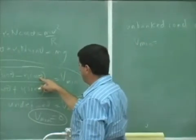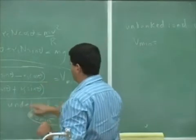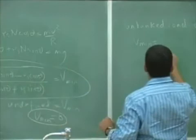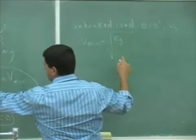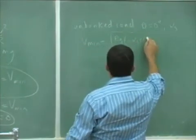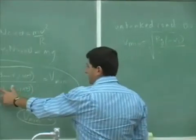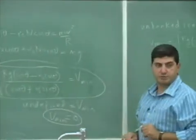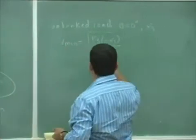You get cosine of 0 is 1, sine of 0 is 0. So you get square root of rg, sine of 0 is 0, minus μ_s cosine of 0 is 1, divided by cosine of 0 plus μ_s. So that's going to be 1, so basically 1.